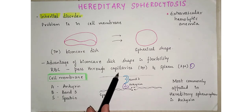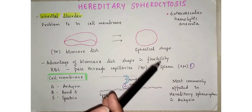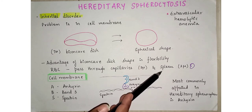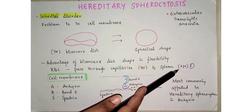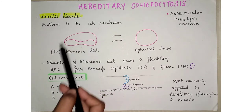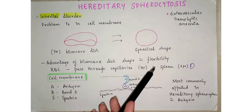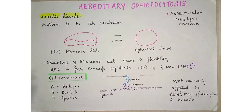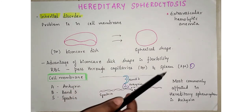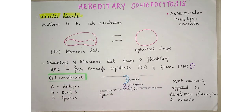RBCs pass through capillaries, which are the smallest vessels in our bodies, almost 3 microns in diameter. In some vessels of the spleen, such as the cords of Billroth, the diameter is less than or almost equal to 2 microns. A normal RBC is 7 microns, so it must twist and bend itself to pass through capillaries and the spleen. Due to the spherical shape, it cannot pass through and this leads to rupture or hemolysis — that is what happens in hereditary spherocytosis.